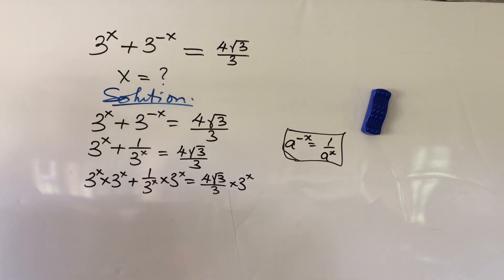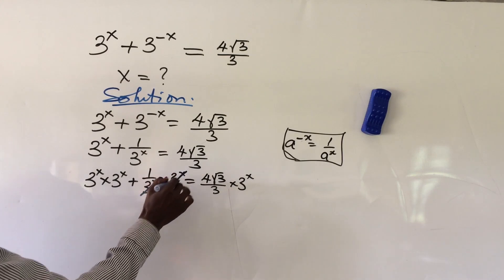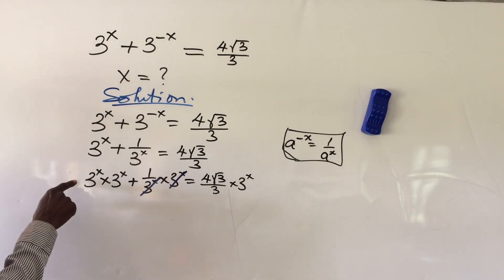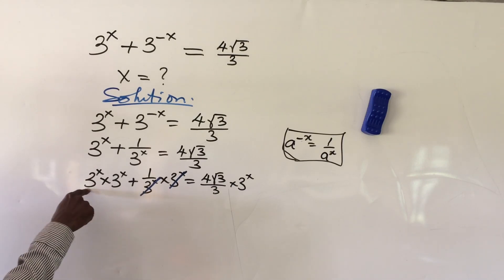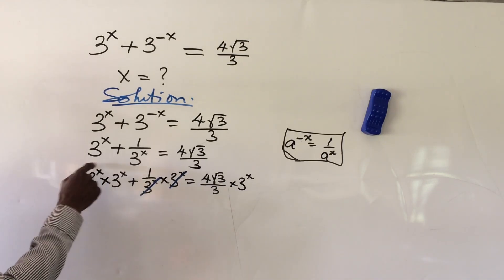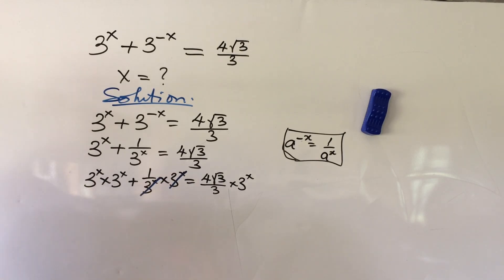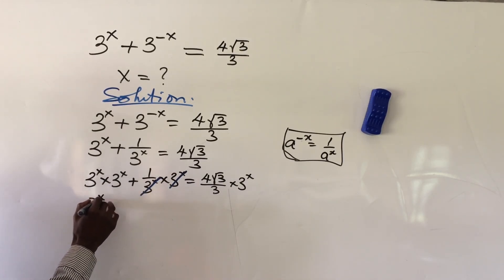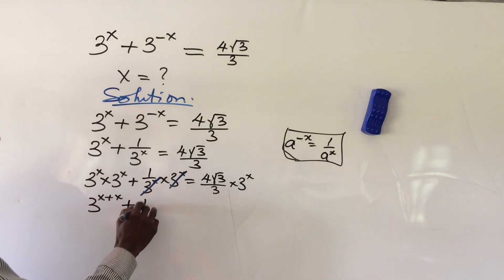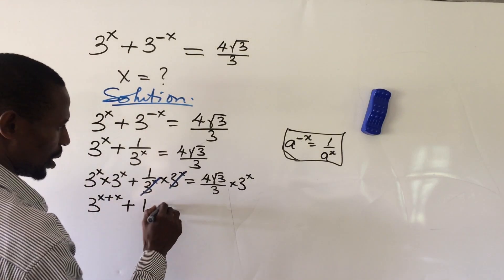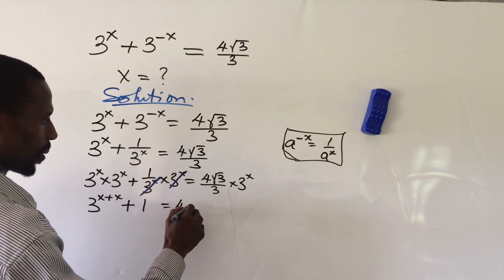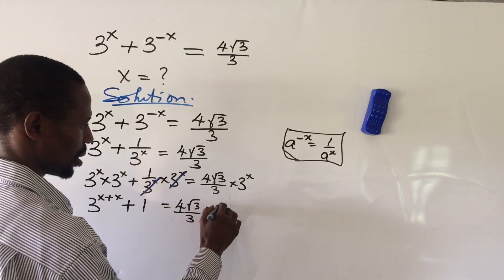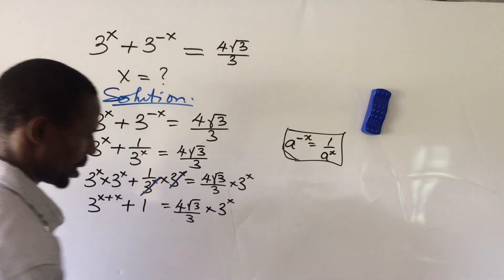Now you'll discover that this will cancel with this — we are left with 1. Then according to the law of indices, we have the same bases so we can add the exponents, giving us 3 to the power of 2x plus 1, equal to 4 root 3 all over 3 times 3 to the power of x.